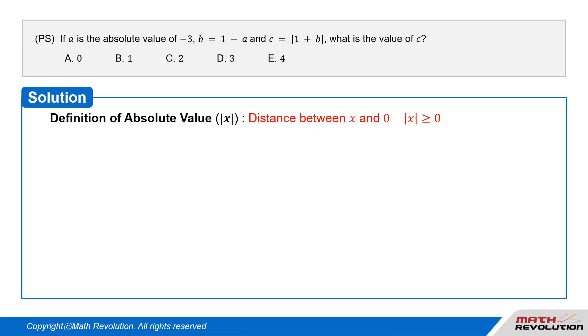Solution. Definition of Absolute Value: It is the distance between a number and 0, so it is always positive or equal to 0. The absolute value of x is represented as |x|, and |x| ≥ 0.